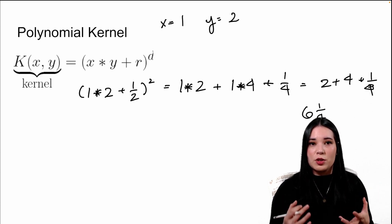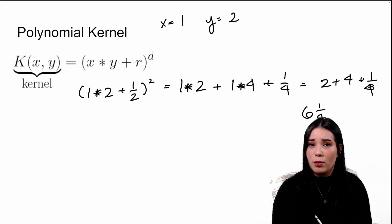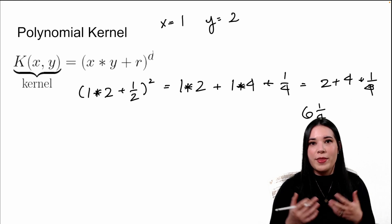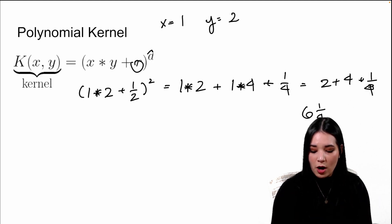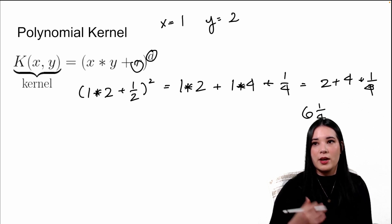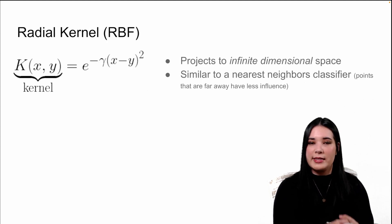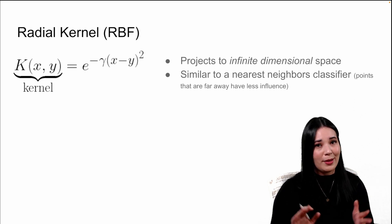And that's what makes the kernel trick so special. Kernels allow us to calculate the relationships between two points as if we projected them into higher dimensions without actually having to do that projection. We can use the polynomial kernel with a bunch of different coefficients for r or degrees for d. The d basically controls the maximum amount of dimensions that we could have. The polynomial kernel is incredibly useful and very popular, but I also want to talk about a different kernel called the radial kernel, which is maybe even more popular.